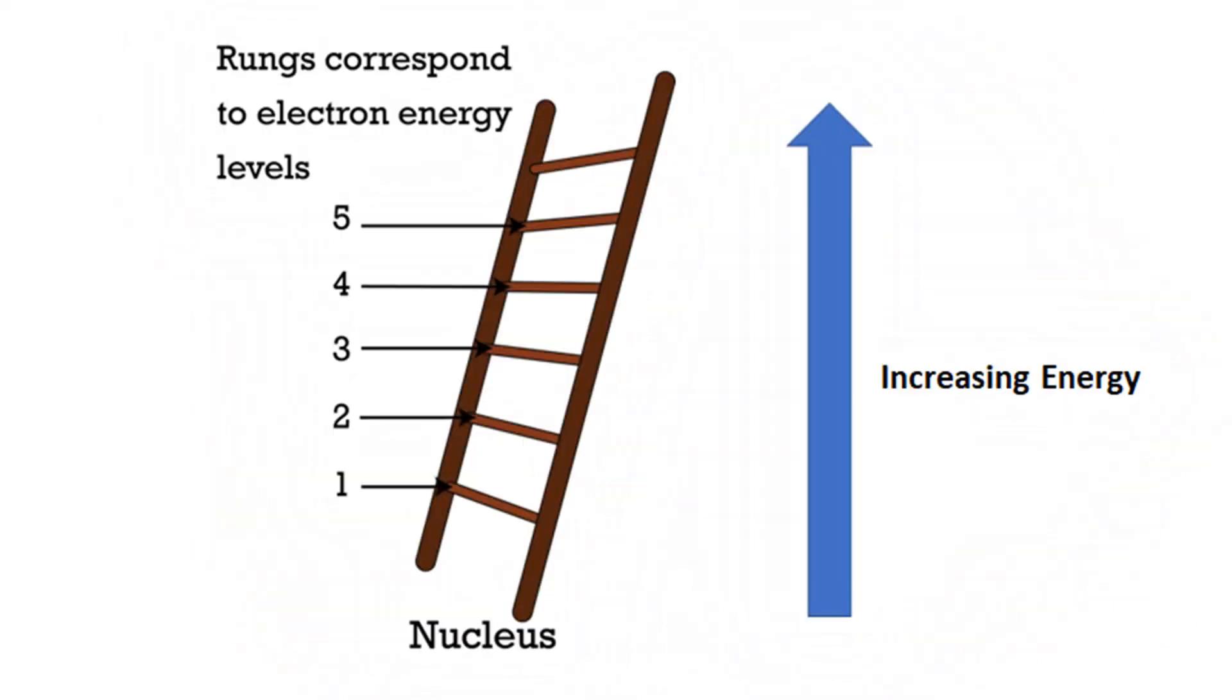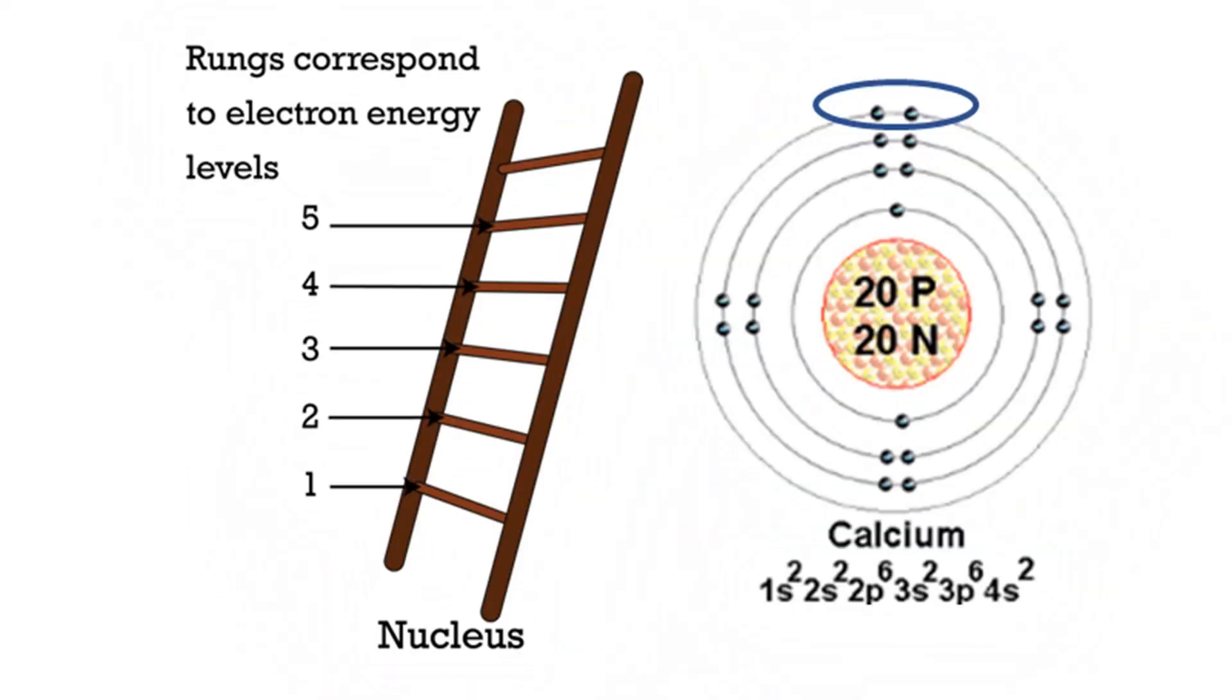Instead of a ladder, you might prefer to think of the spacing of energy levels in terms of garden steps like those illustrated in this figure. The steps become closer together as you climb higher. This makes it easier to step off at the top. Similarly, the higher the energy level occupied by an electron, the easier the electron escapes from the atom.